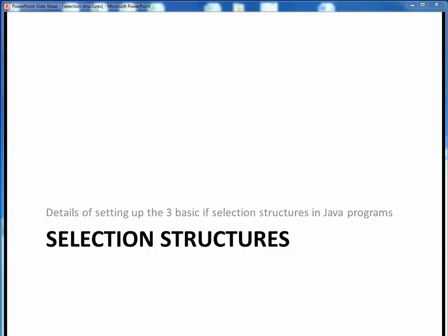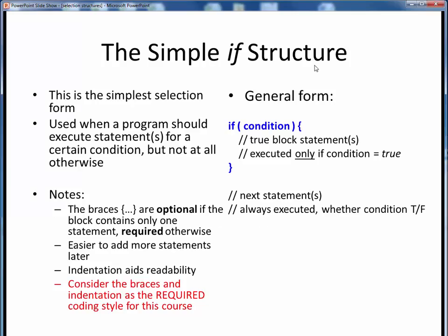In this video lecture, we want to go through the mechanics of setting up the three basic IF selection structures in Java programs. Okay, let's get started. The simple IF structure is the simplest form of selection in Java programs, so we'll begin with it. We use this form when we want our program to execute certain statements if a certain condition is true, but not otherwise.